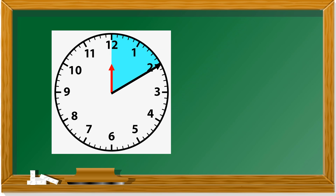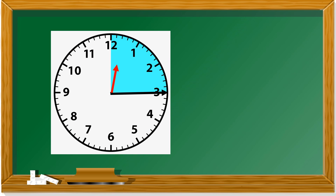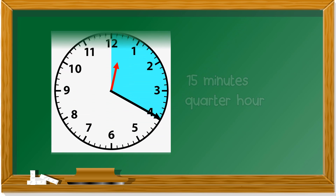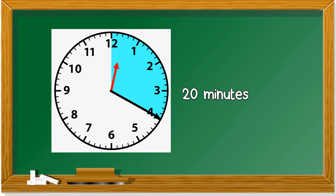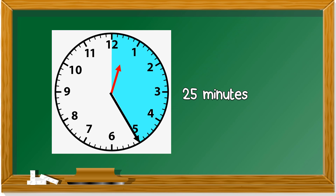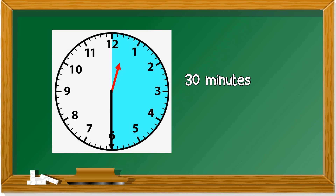When the minute hand is at two, ten minutes — because two times five is ten. When the minute hand is at three, fifteen minutes. Fifteen minutes we call it quarter hour. Quarter in Malay is suku — satu suku. Just remember your multiplication of five: twenty minutes, twenty-five minutes, thirty minutes. Thirty minutes means we are already half of the clock — that is half an hour, setengah jam.